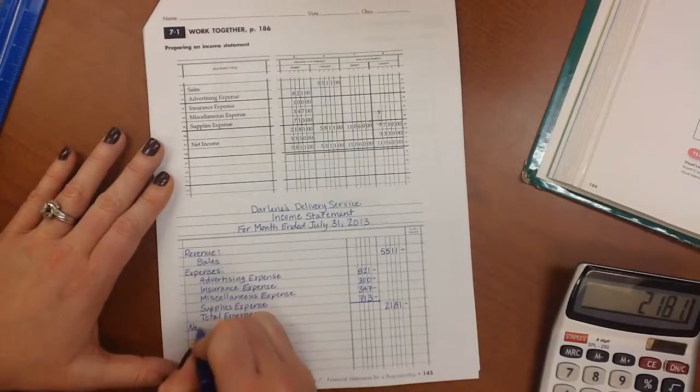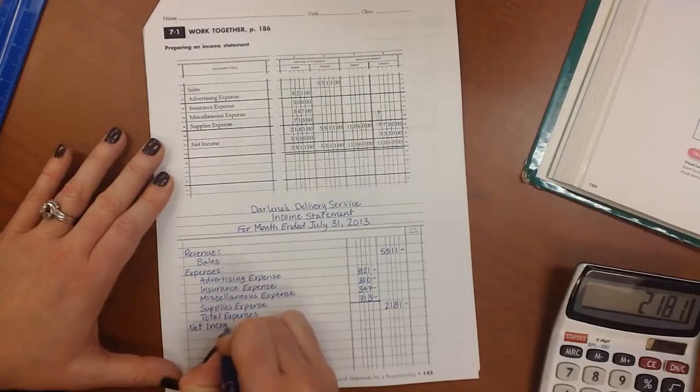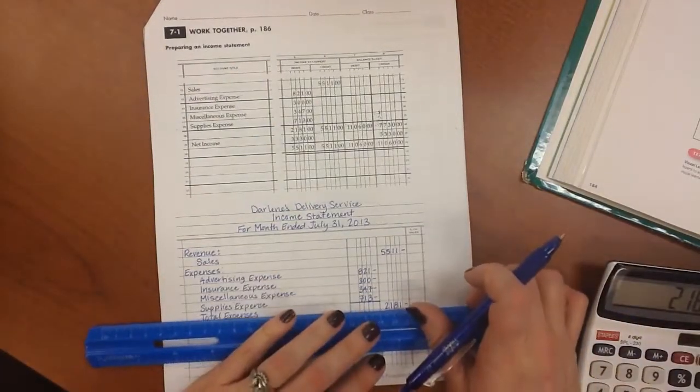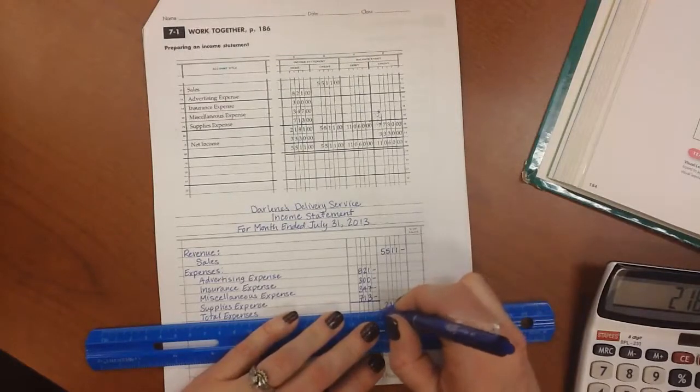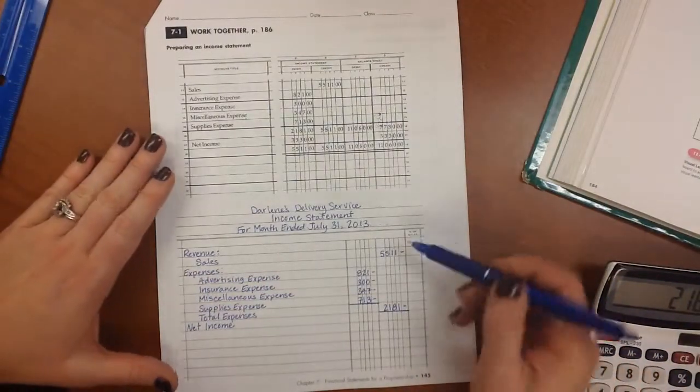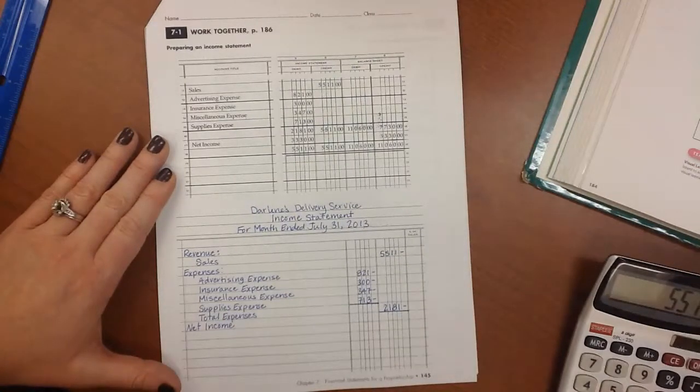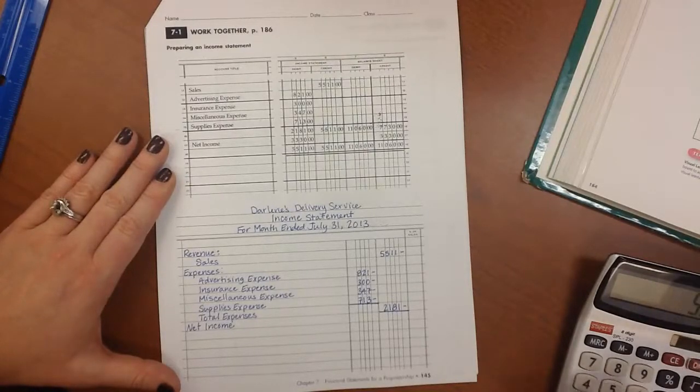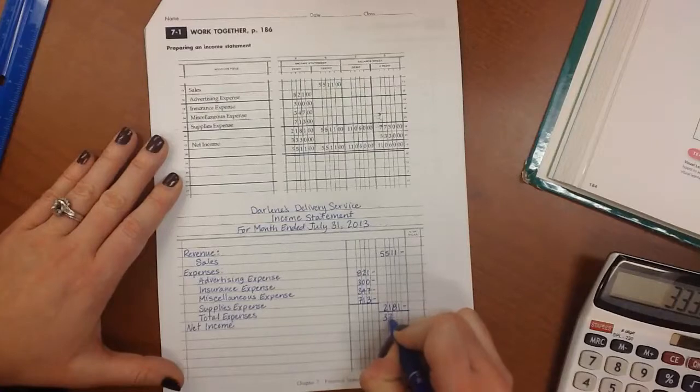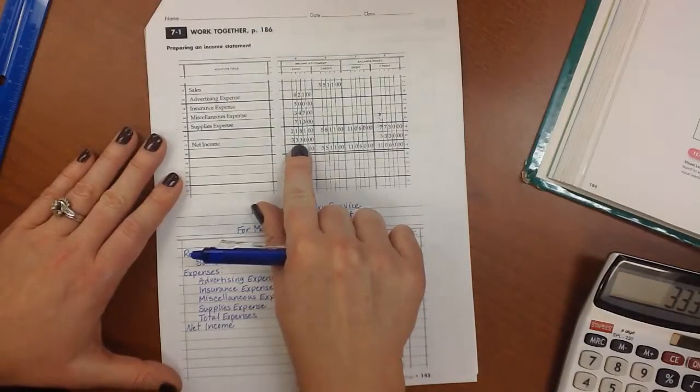Then we have our last side heading, which is either net income or net loss. And for this one we had net income, it goes back against the margin. And we're going to come here and put a single rule under the second column. Then the formula to calculate net income is revenue minus expenses. So we're going to take this total minus this total. And we should get 3,330. And this number should match the net income on this line if we have not done any of our math wrong.